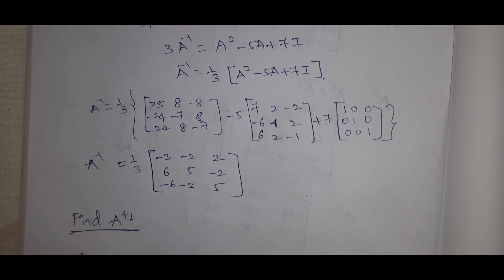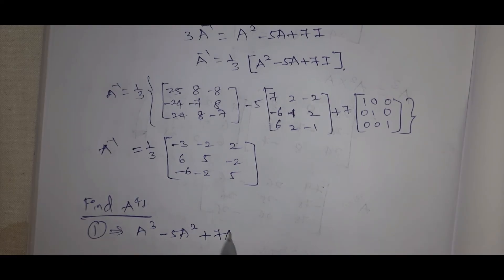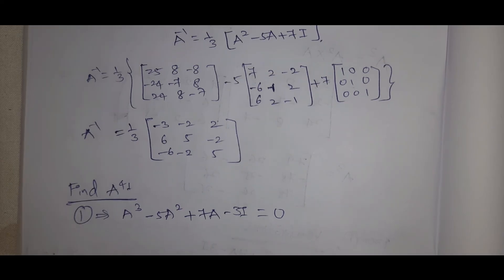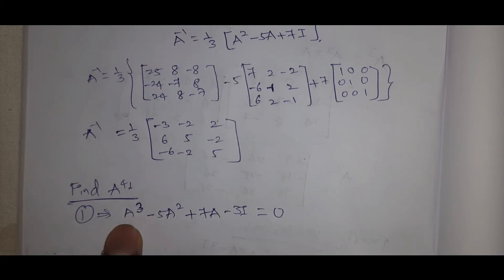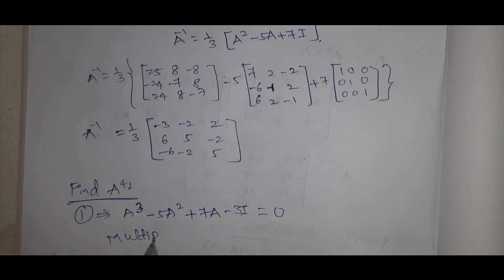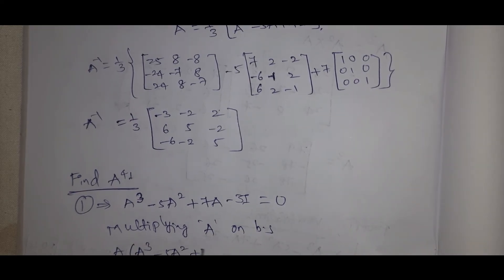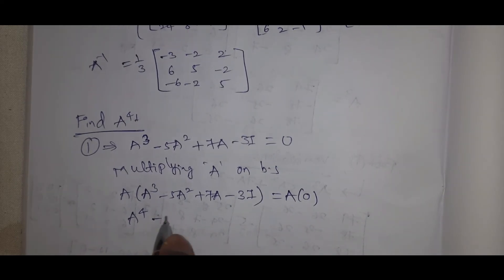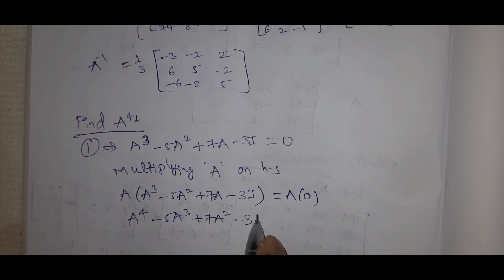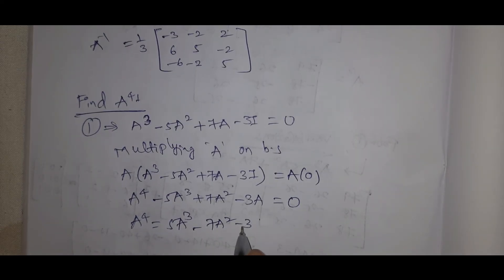Now find A power 4. From equation 1, A cubed minus 5A squared plus 7A minus 3I equals 0. Multiply both sides by A: A times A cubed minus 5A squared plus 7A minus 3I equals 0. This gives A power 4 minus 5A cubed plus 7A squared minus 3A equals 0. Therefore A power 4 equals 5A cubed minus 7A squared plus 3A.